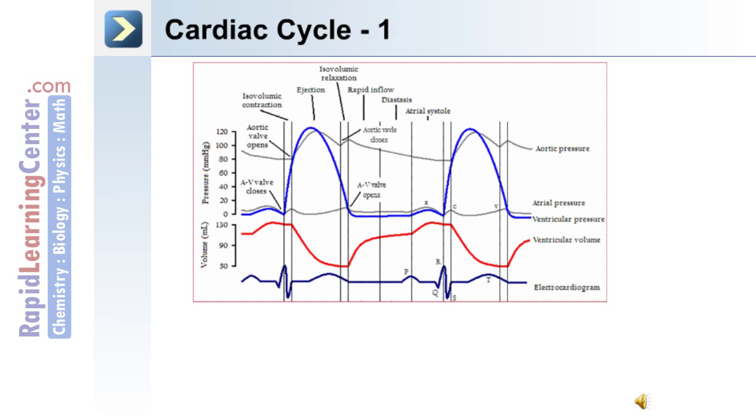Let's use this chart to describe the changes in the cardiac cycle. You'll notice pressure and volume on the left axis and a number of tracings on the chart: aortic pressure, atrial pressure, the pressure in the ventricles, the volume in the ventricles, and along the bottom is the electrocardiogram.